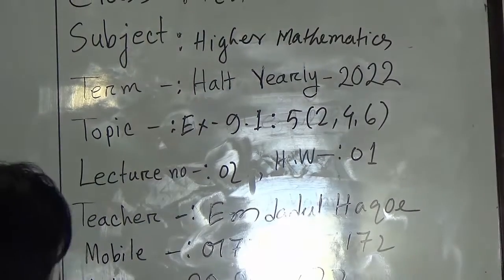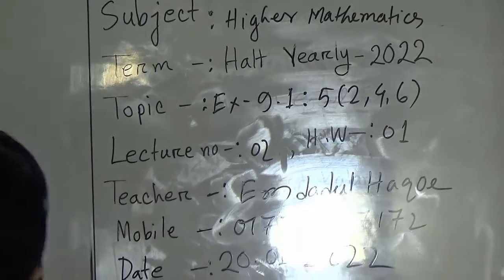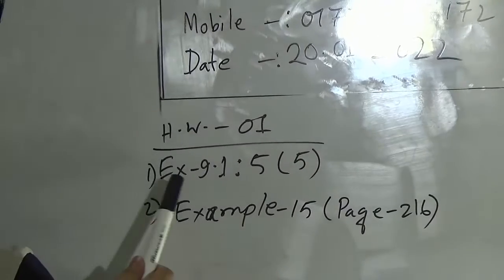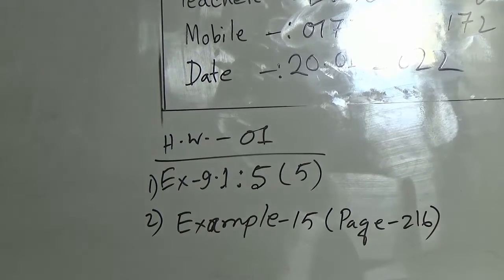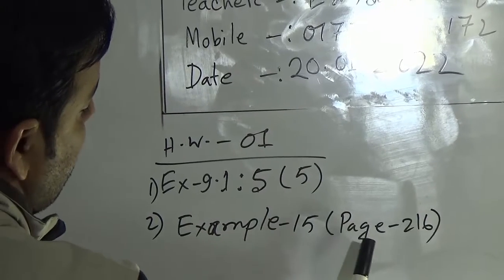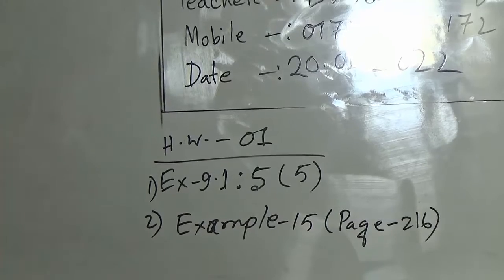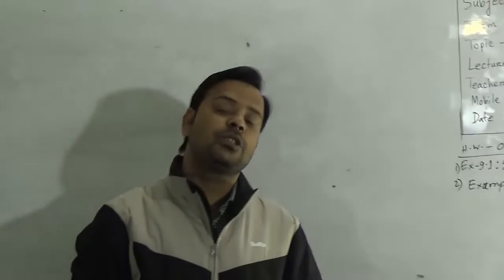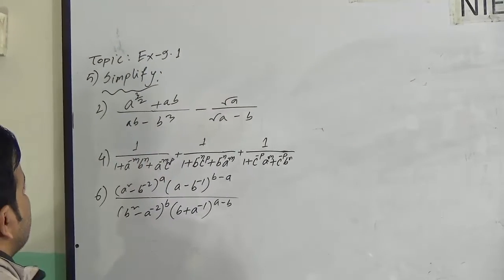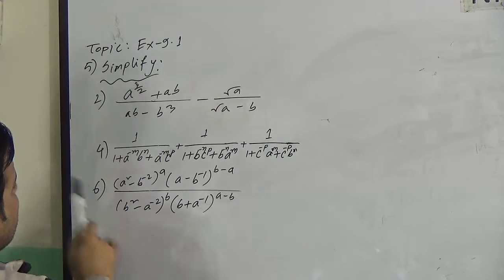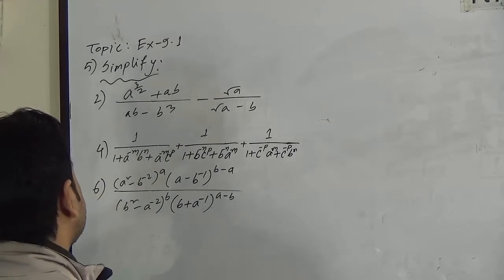These 3 questions of Question 5 I have to solve in our today's class. This topic is from the half-yearly 2022. This is our lecture number 2, and homework numbers 1 and 2 are given. Your homework is Exercise 9.1, Question 5 of part 5, and Example 15 at page 216. Dear students, when I complete today's class, you will be able to solve the given homework.